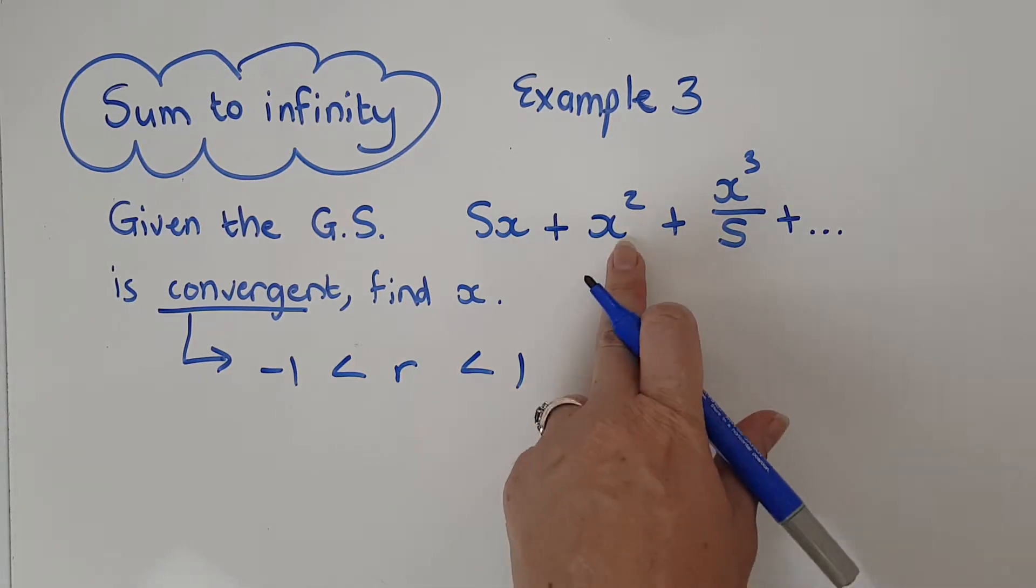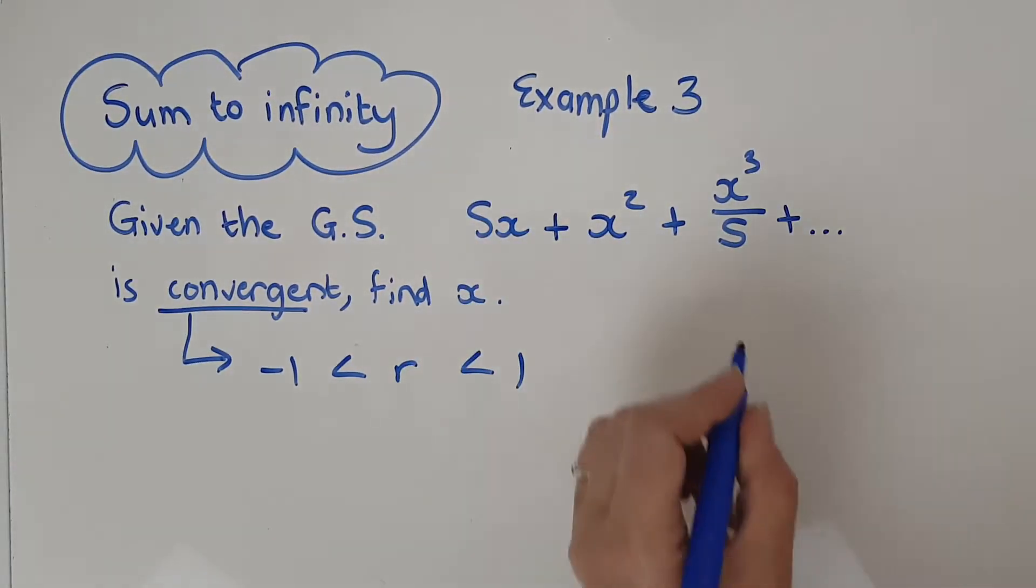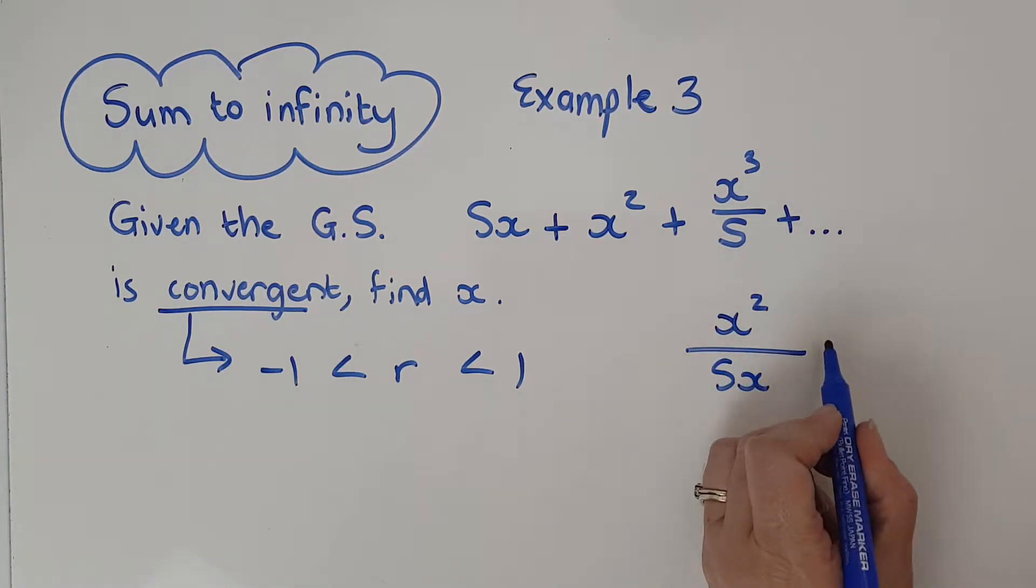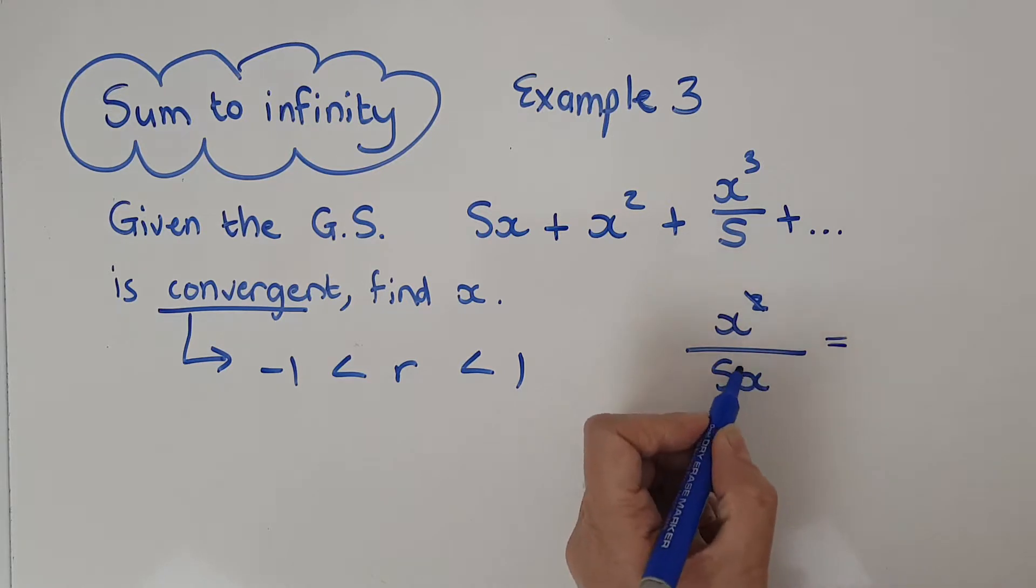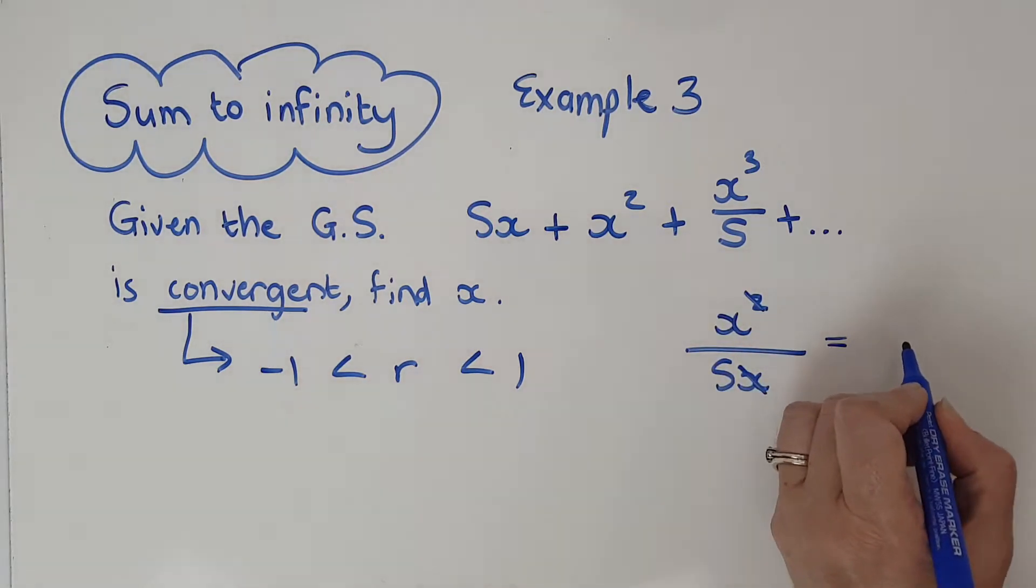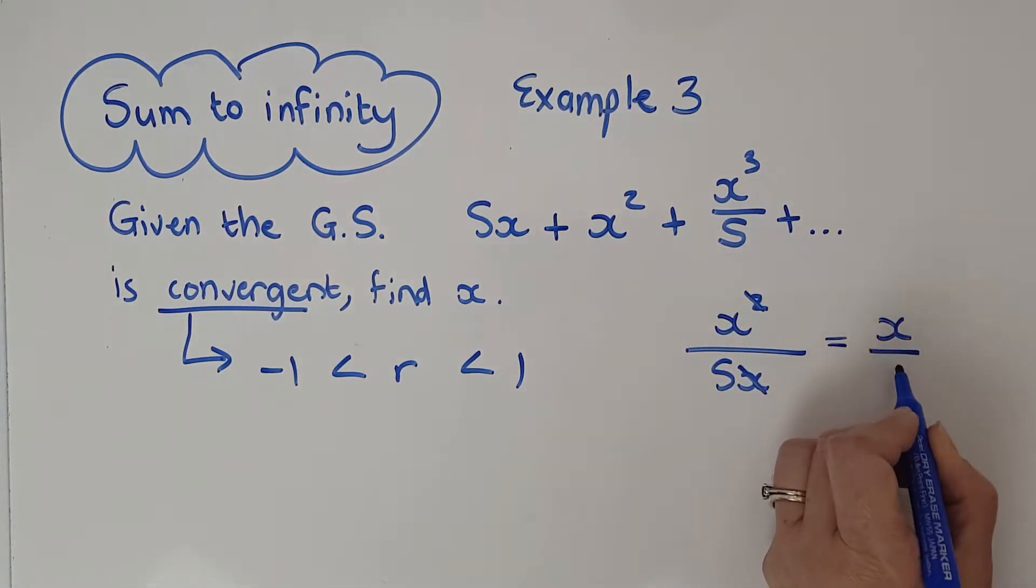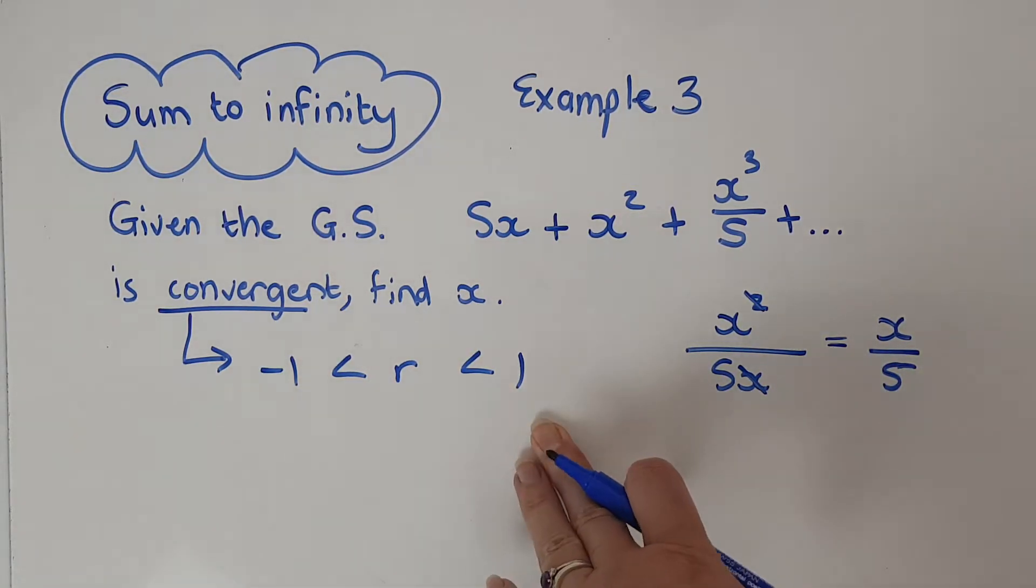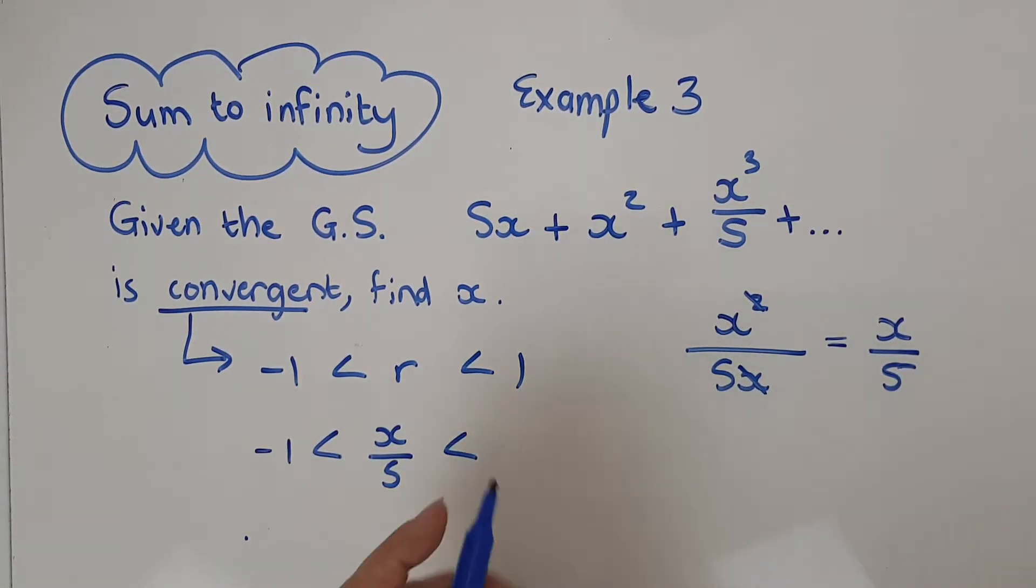So now I need to just get r. I'm just going to take this one over that one, so it's going to be x squared over 5x. Let's simplify that a little bit. So that'll cancel with this one, I'm going to have x over 5. Okay, what I know about x over 5 now is it is between negative one and one.